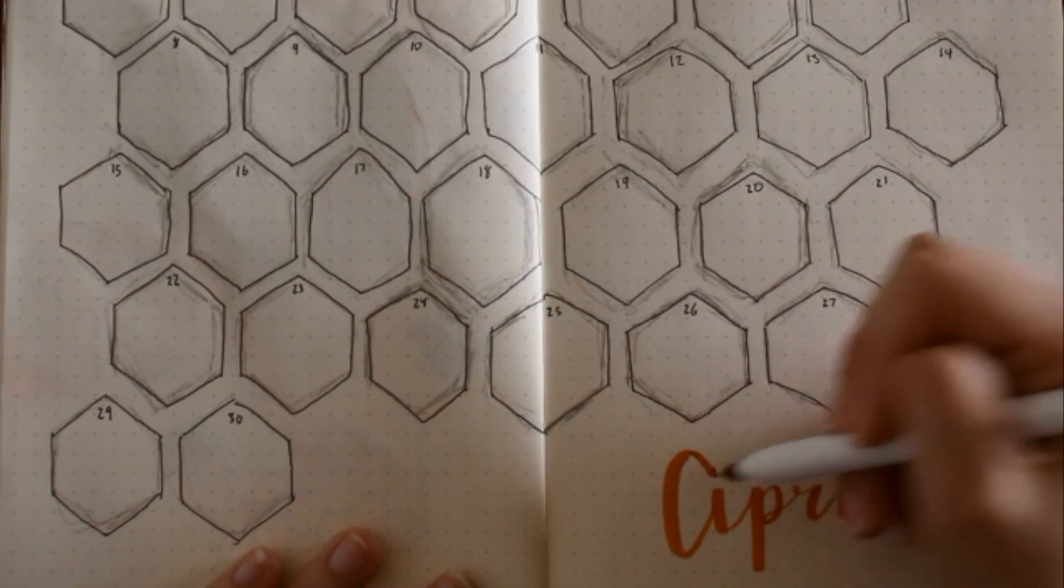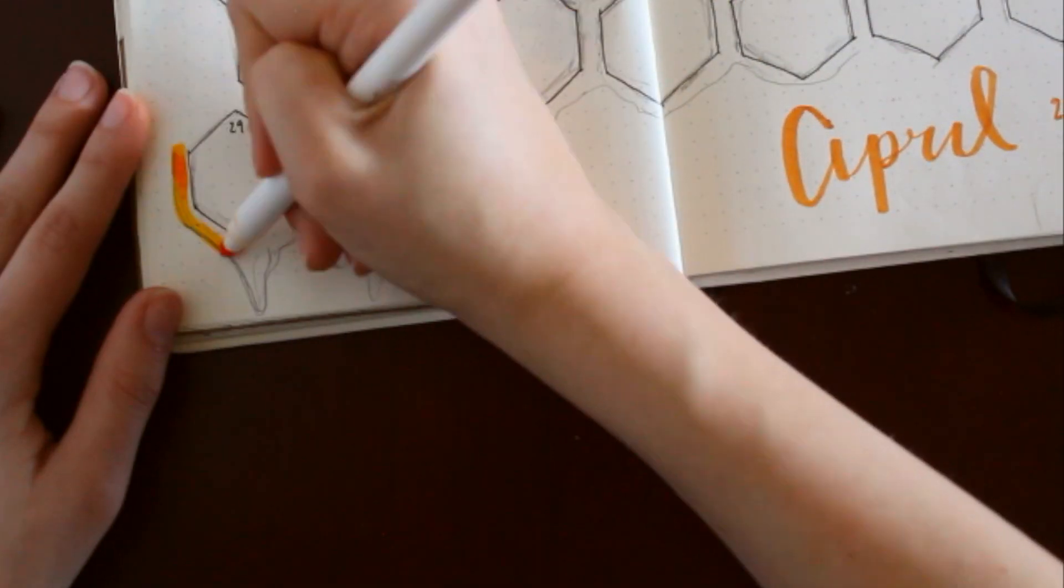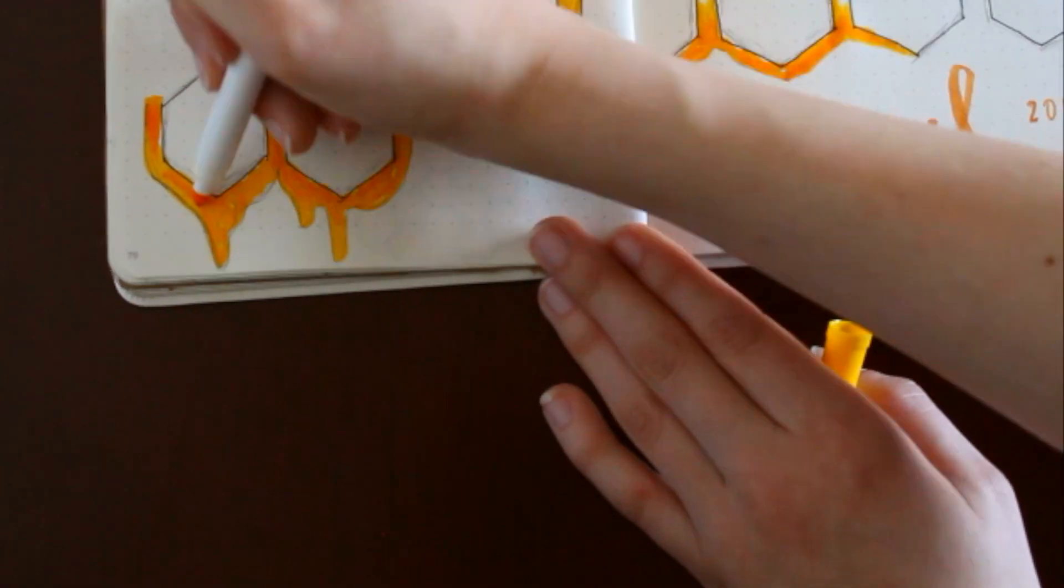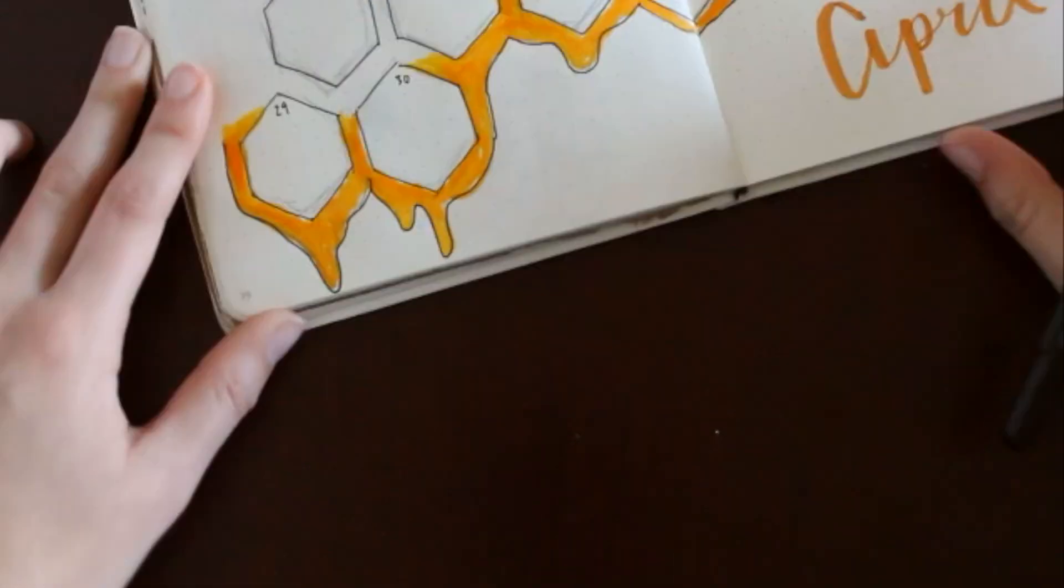And then I'm going to actually change this April with another piece of that brown paper later on, as you'll see in the video, and I'm just adding a couple more honey-dripping details to the spread.